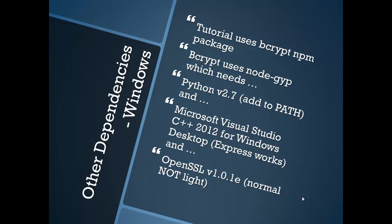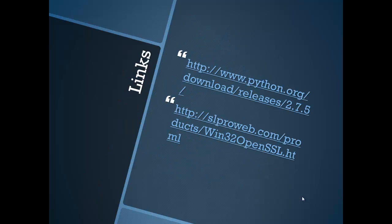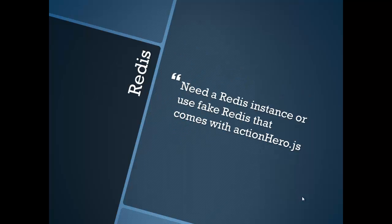It needs a specific version — Python 2.7; version 3.0 won't work. You need to add that to your path, then install a C++ compiler which comes with Visual Studio Express, and it also needs an OpenSSL library — the normal version, not the light version. Here are links to Python and to OpenSSL. You'll also need a Redis instance, not the fake Redis instance that Action Hero sets up for you.